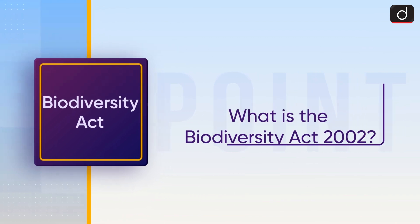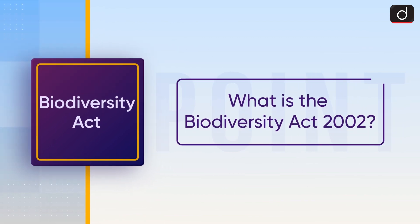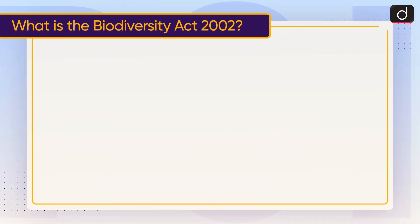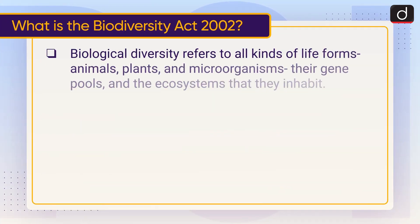Now let's discuss what is the Biodiversity Act 2002. Biological diversity refers to all kinds of life forms — animals, plants and microorganisms — their gene pools and the ecosystems that they inhabit.